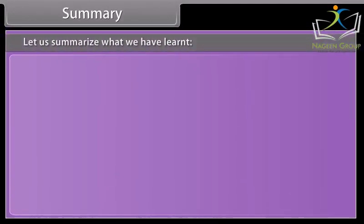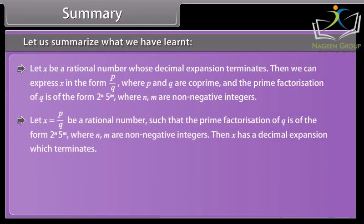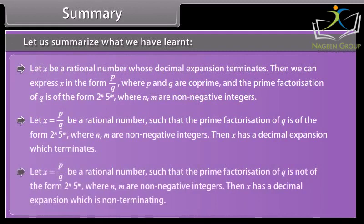Summary: Let x be a rational number whose decimal expansion terminates. Then we can express x in the form P/Q where P and Q are co-prime and the prime factorization of Q is of the form 2ᴺ × 5ᴹ, where N and M are non-negative integers. If x = P/Q is a rational number and the prime factorization of Q is of the form 2ᴺ × 5ᴹ, then x has a terminating decimal expansion. If the prime factorization of Q is not of that form, then x has a non-terminating decimal expansion.